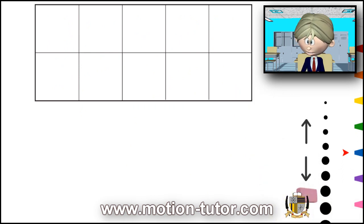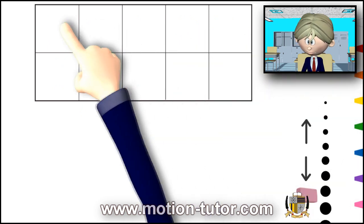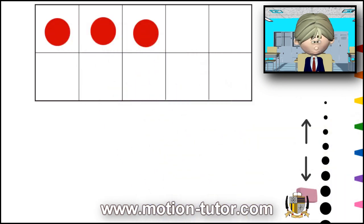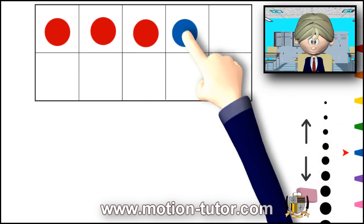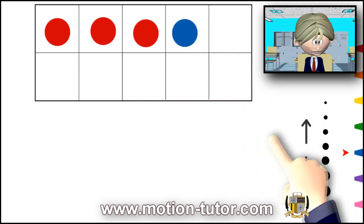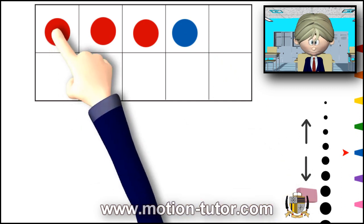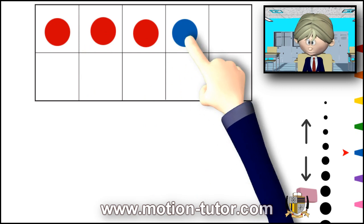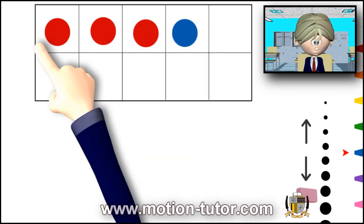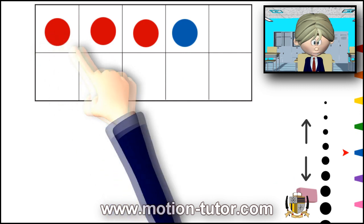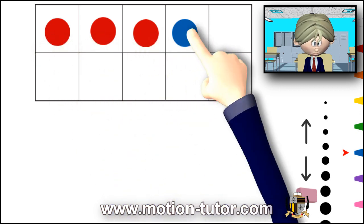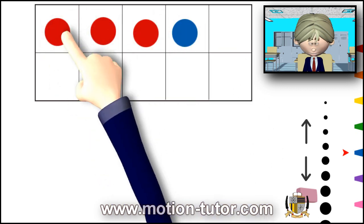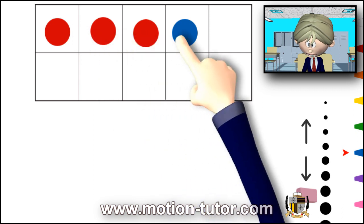Let's look at some more examples. It's 1, 2, 3, 4 counters. So we have 4 counters, and it's made out of 3 reds and 1 blue.